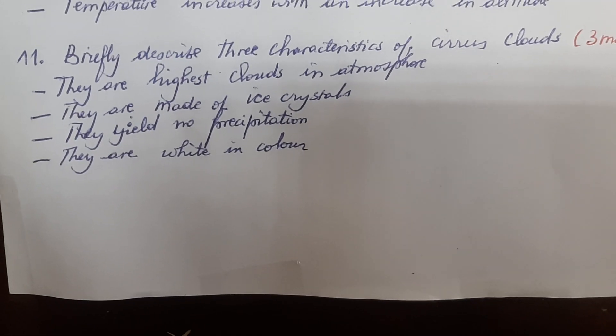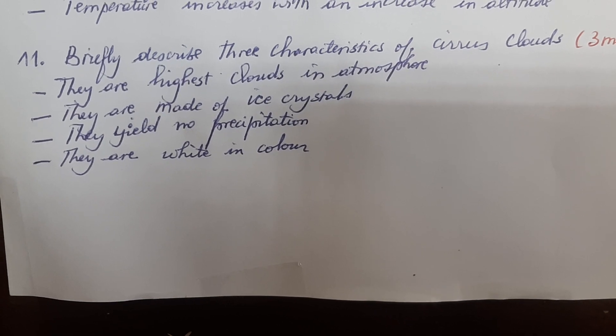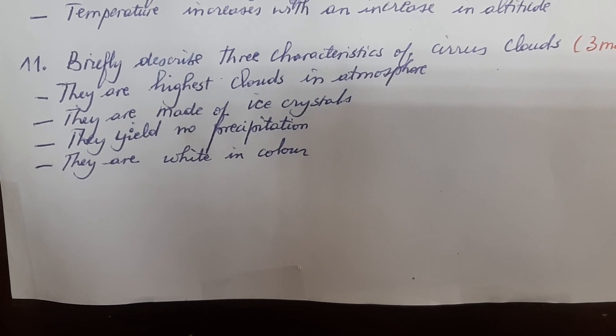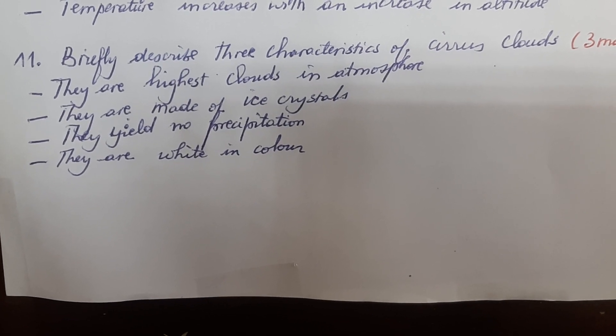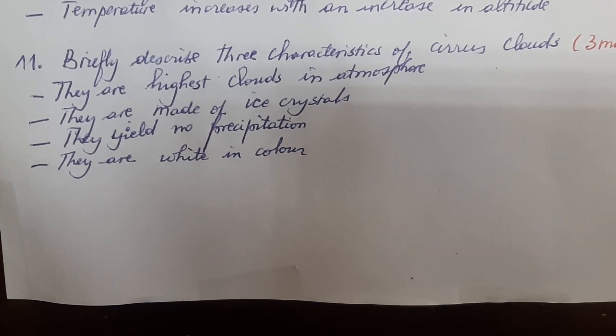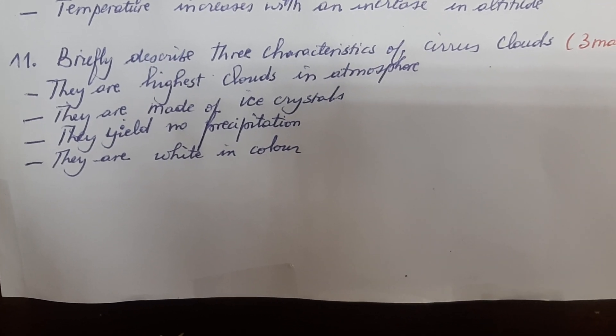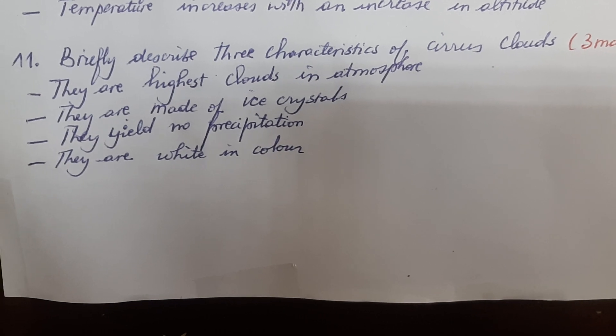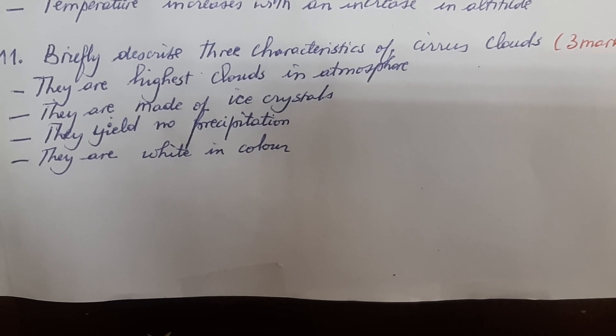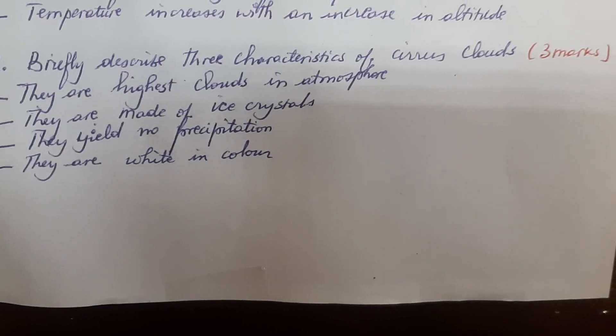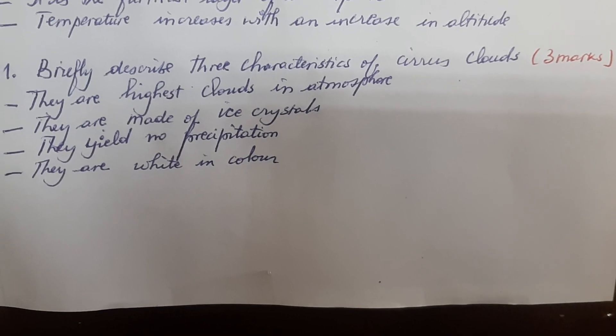Cirrus clouds are white in color. They have a white color, yet they cannot produce or provide rainfall.